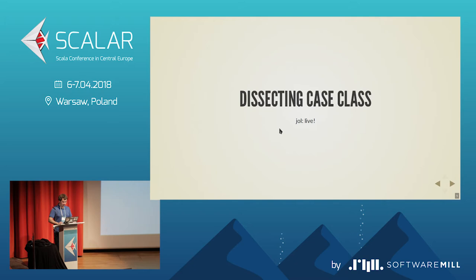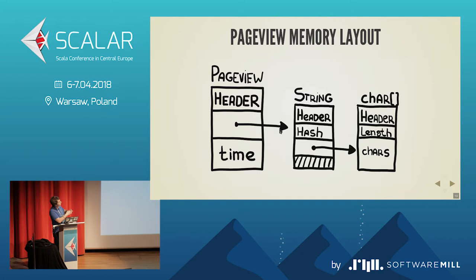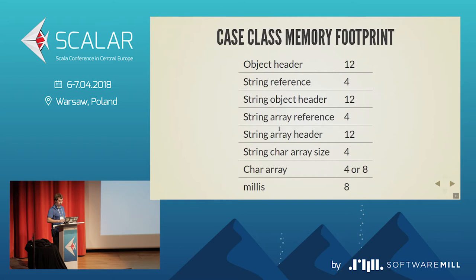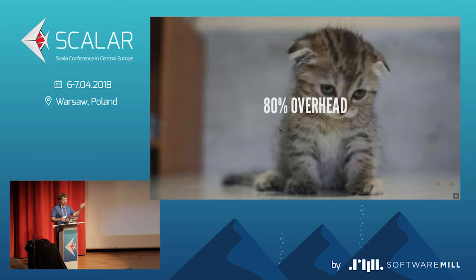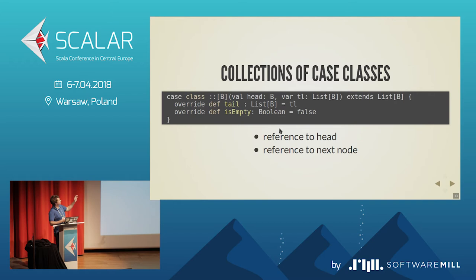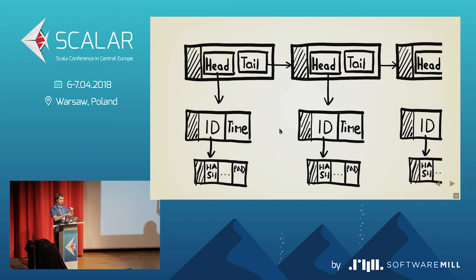If we sum it all up, our simple precious PageView is actually a huge and complex structure going deep into your heap. When you add everything together in a list of all the pieces, you see that a lot of memory is being used. It's not really wasted, but you cannot use it in a more effective way. The case class overhead is almost 80%, which is very disappointing.